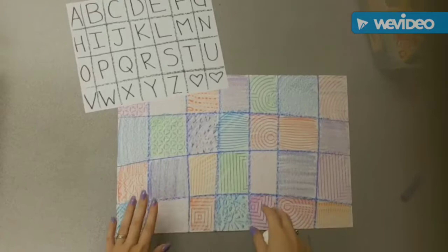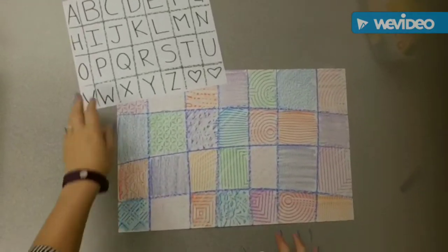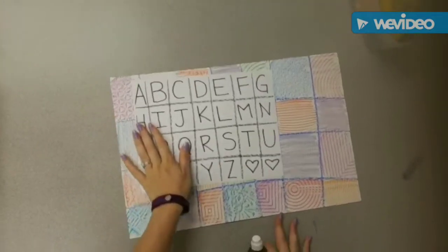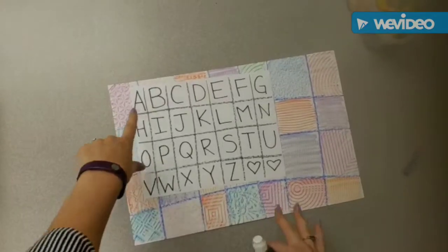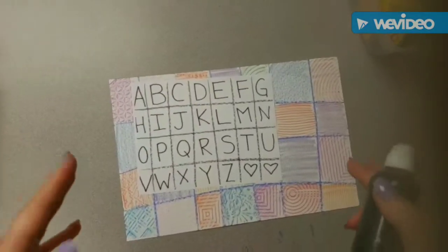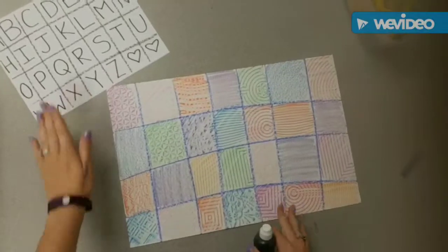Now boys and girls, we are going to be adding the alphabet to our boxes. Each of you got an example paper like this, and we're going to be copying it so that our alphabet looks just like this but on our colorful paper.